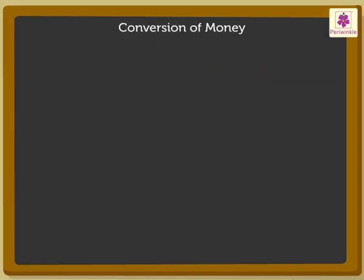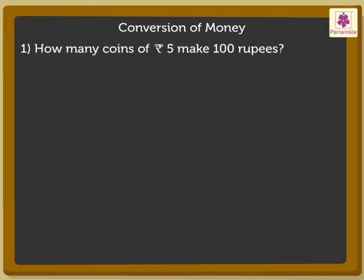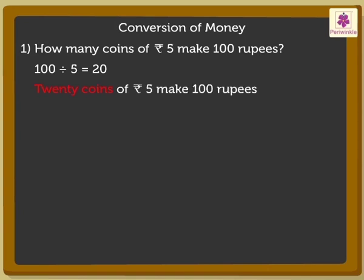Now, let's look at some examples showing different conversions. How many coins of 5 rupees make 100 rupees? Think — 100 divided by 5 is equal to 20. So, 20 coins of 5 rupees make 100 rupees.